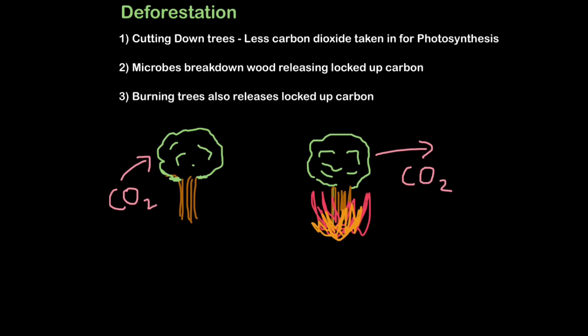So when trees die, the carbon they've taken in through photosynthesis remains in their wood, locked up. But microbes such as fungi can break the wood down, releasing this locked up carbon back into the atmosphere. Also, when we burn trees, we release that locked up carbon back into the atmosphere as carbon dioxide.